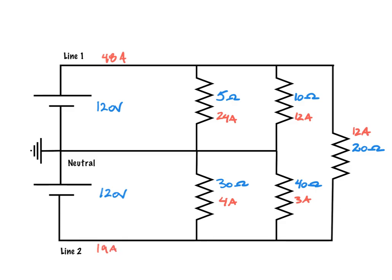So now we have a situation where we're unbalanced, because our line 1 does not equal our line 2. And that is where the whole idea of the neutral comes in. The neutral carries the unbalanced current. So what we're going to do here is we're just going to take the line 1, 48 amps, we're going to subtract 19 amps from there, and we're going to get a neutral current of 29 amps.